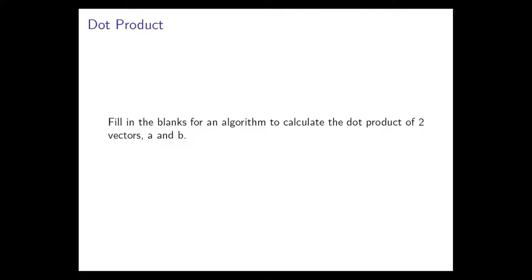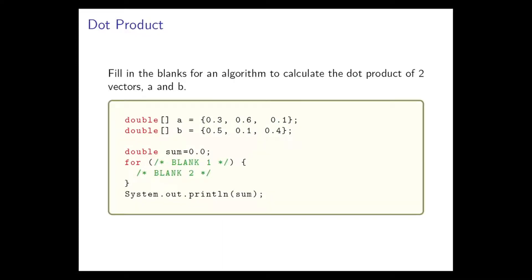The first thing we're going to do is have you fill in the blanks for an algorithm to calculate the dot product of two vectors a and b. We already mentioned this as a thing you can do, so this is just a warm-up of something you've seen before. Have a think about how you would do that.